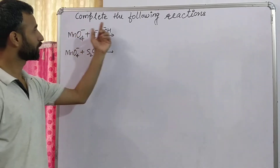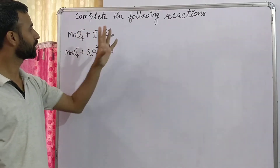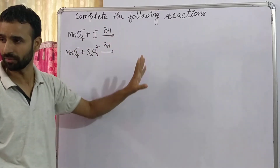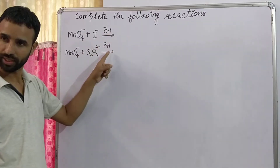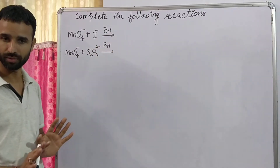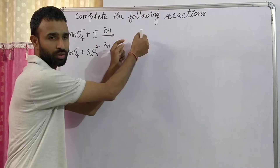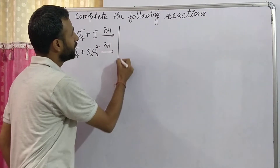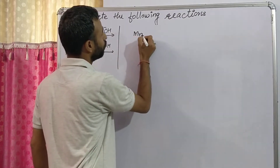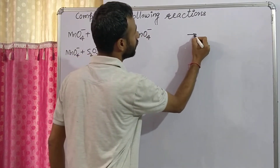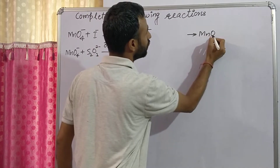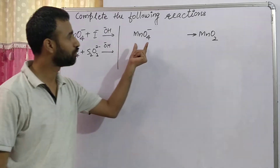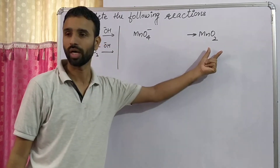If the question says 'complete the following equation' and it is written OH⁻ or 'basic medium', that means it is basic medium. Now in basic medium, MnO₄⁻ is converted into MnO₂. Keep in mind: in basic or neutral medium, MnO₄⁻ is converted into MnO₂.